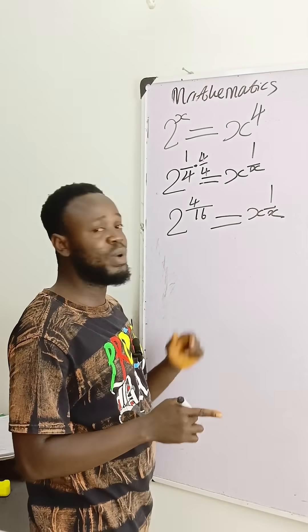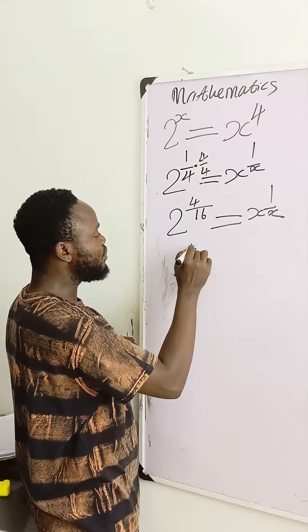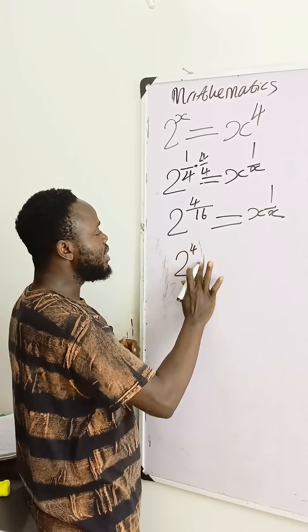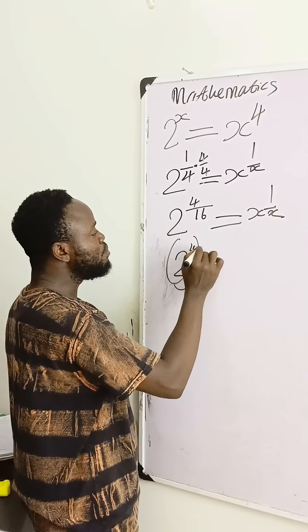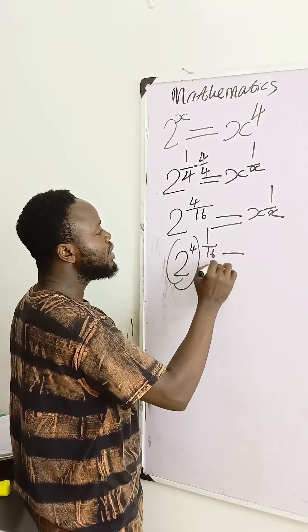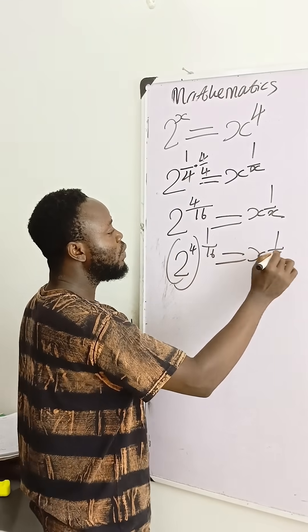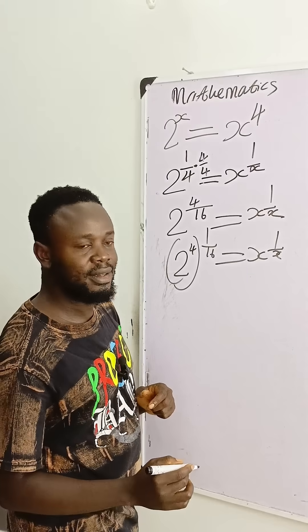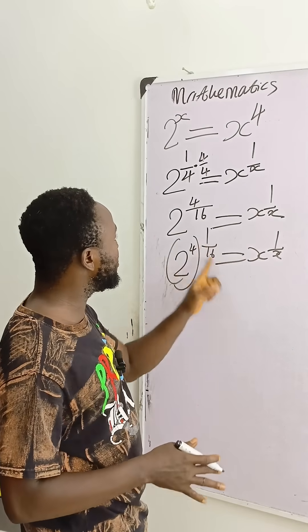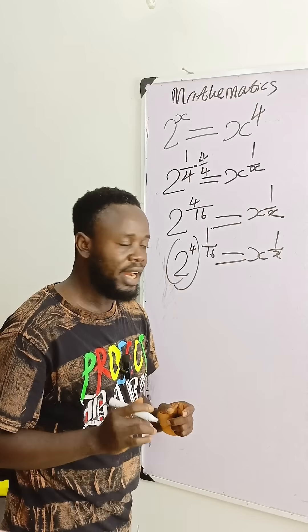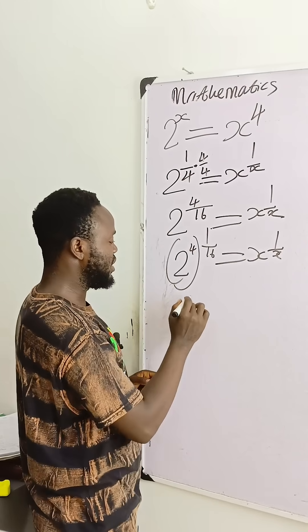I can simplify this one to have 2 raised to power 4. This one and this one are the same thing - we got 4 times 1 over 16. Then 2 raised to power 4 is 16.